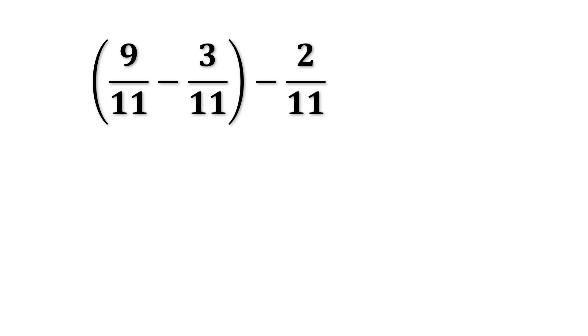The question is 9 over 11 minus 3 over 11 in bracket minus 2 over 11. So this is one of the simplest fraction simplifications.